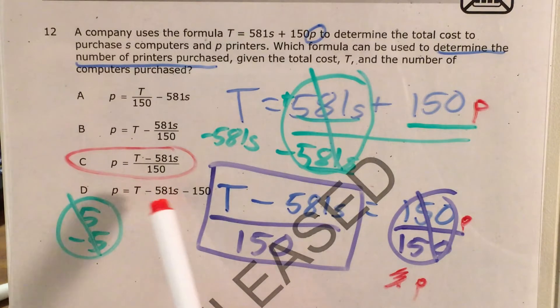It couldn't be choice A. Choice D is silly, because we divided, not subtracted. But anyway, our only remaining answer is C.